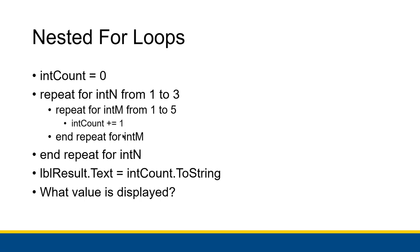We can think about that quickly. For the first iteration when N equals 1, M is going to be 1, then 2, then 3, then 4, then 5. So the inner loop runs 5 times, and int count gets 1 added to it 5 times — at the end of all 5 iterations, int count equals 5. Then N goes to 2, we add 1 five more times, so int count is 10. Then N goes to 3, we add 1 five more times, so int count becomes 15. N goes to 4, it's kicked out of the outer loop, and we display 15 — which equals 3 times 5.